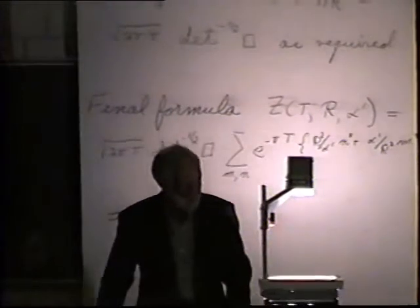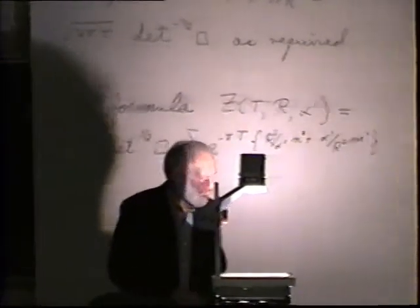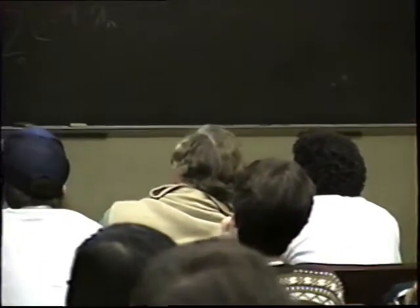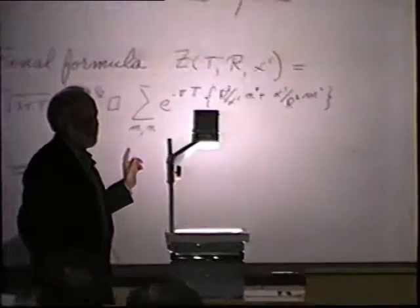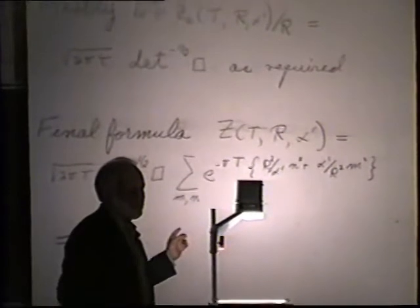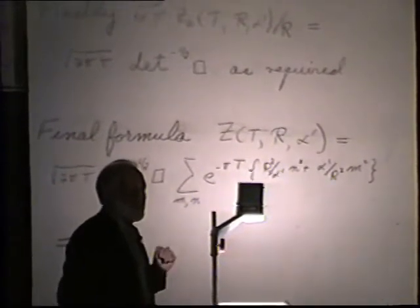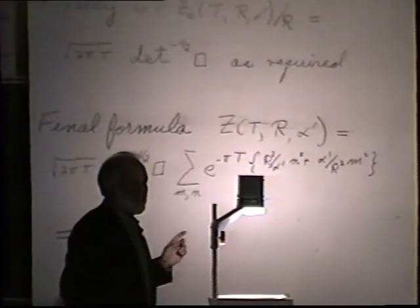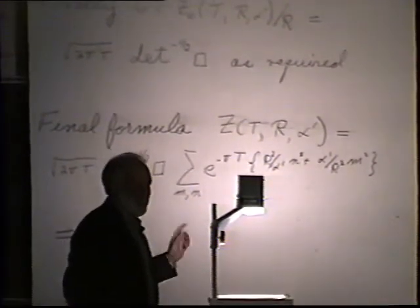Question from audience: Why is the square root of T working out — I understand the function argument but the square root of T won't come from that. Answer: The actual value involves the scale as well; the value of the determinant in Dedekind's second limit formula will take care of that.